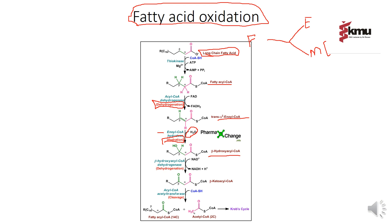In the fourth step, beta-hydroxy acyl-CoA is converted to beta-keto acyl-CoA. In this step, NAD is converted into NADH plus hydrogen ions. This is again dehydrogenation — the loss of hydrogen ions from any molecule. If hydrogen ions are removed from a molecule, that process is called dehydrogenation.